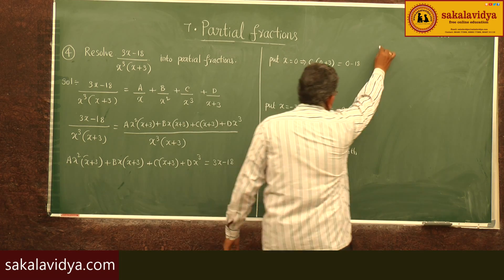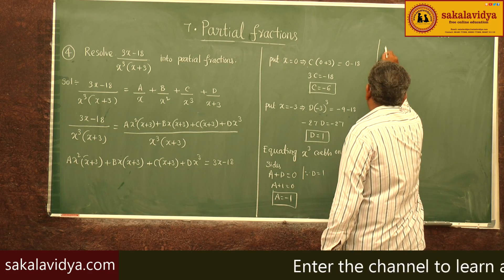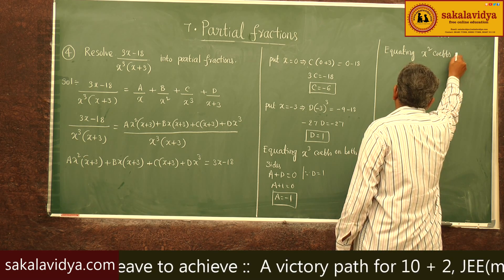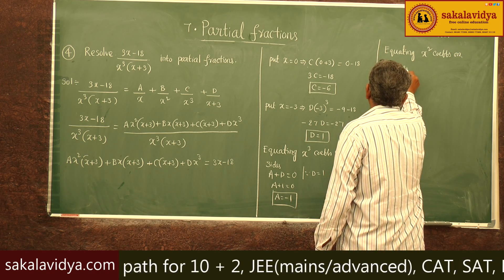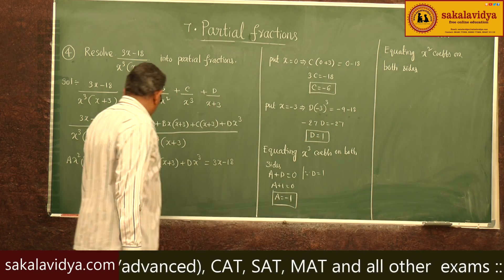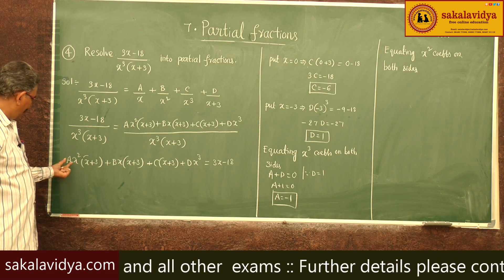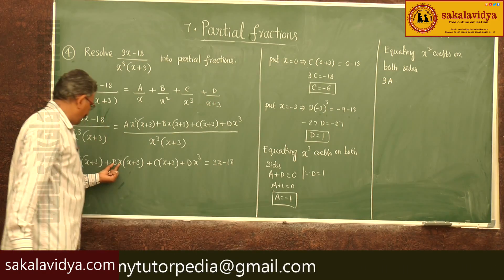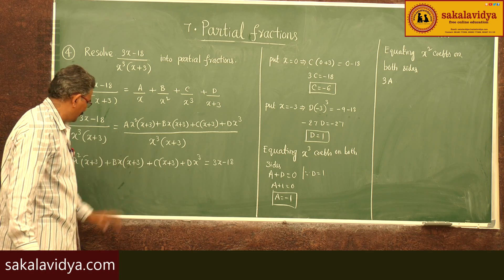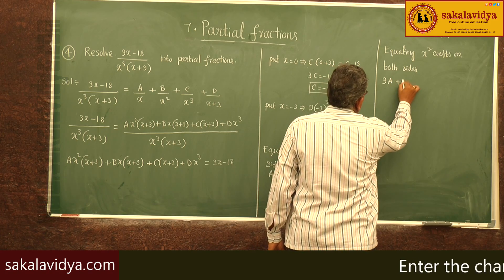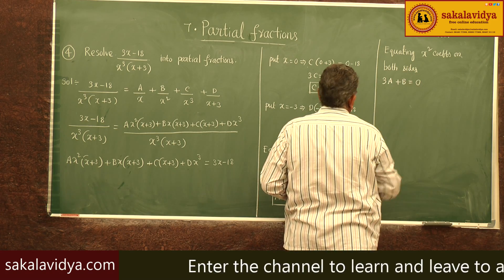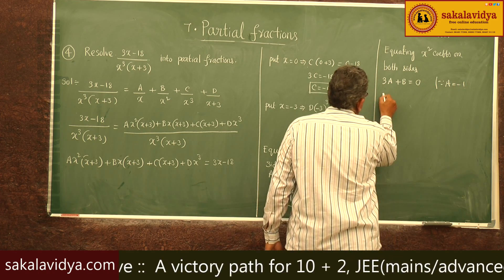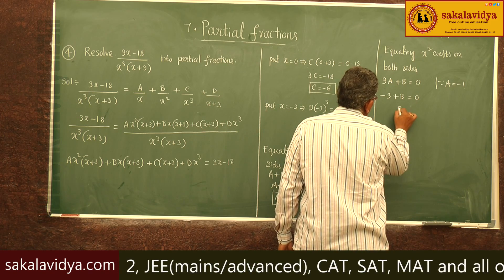Now equating x squared coefficients on both sides. The x squared terms come from A x squared times 3 giving 3A, and from B x times x giving B. The x squared coefficient on the right-hand side is 0. So 3A plus B equals 0. Since A equals minus 1: minus 3 plus B equals 0, therefore B equals 3.